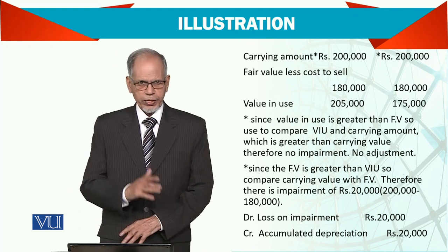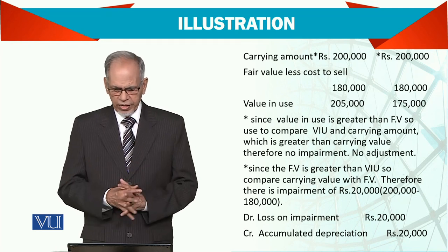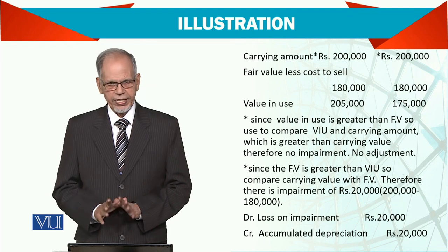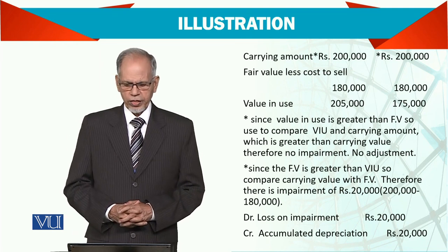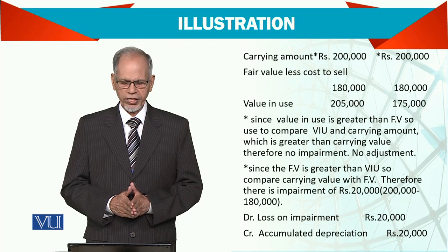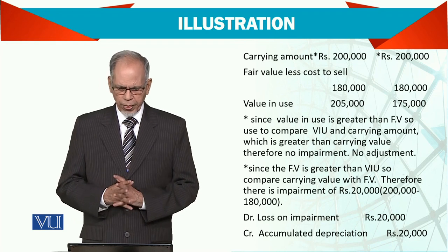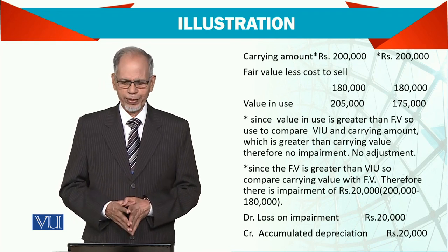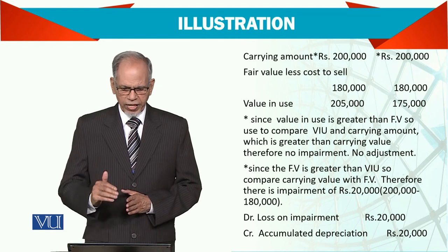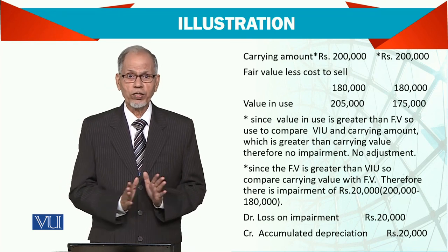Now consider this example. Carrying amount is 200,000 for both assets A and B. Fair value less cost to sell is 180 for both. Value in use is 250,000 for A and 175,000 for B. For asset A, we compare: value in use of 250,000 is greater than fair value less cost to sell of 180,000, so we compare value in use with the carrying amount of 200,000. Since value in use is greater than the carrying amount, there is no impairment and no adjustment required.